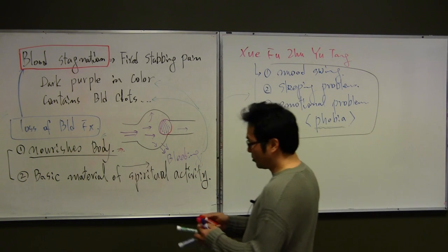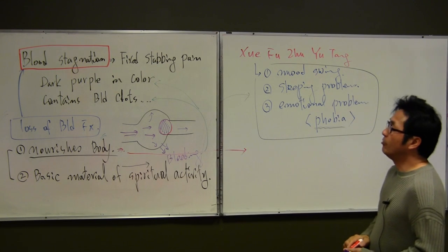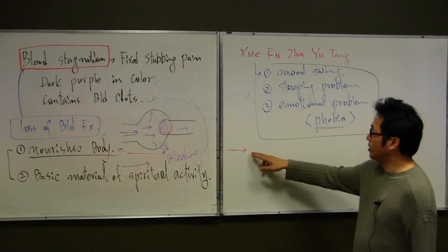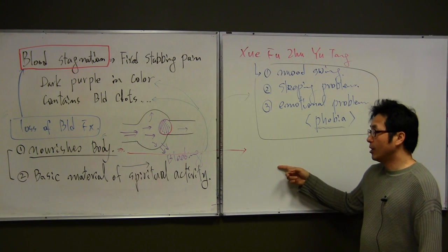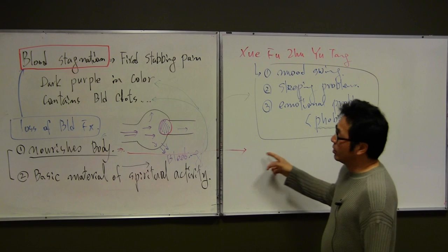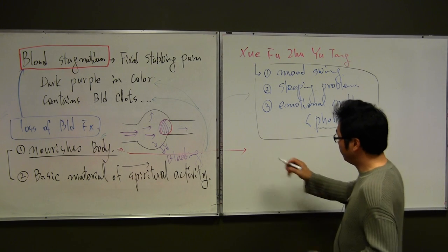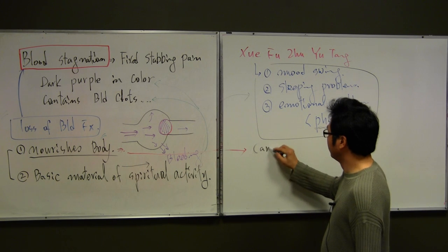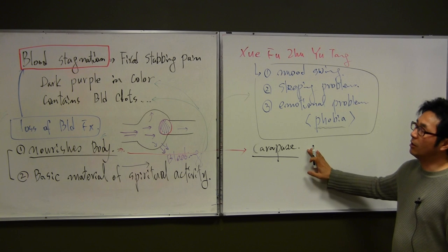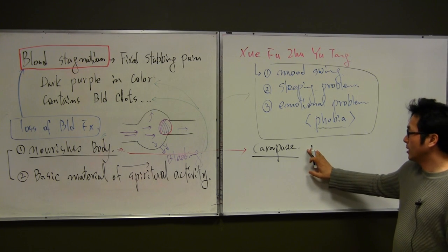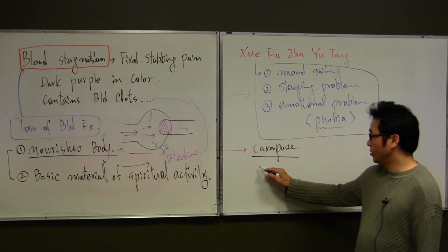This one of sign which is Xuefu Zhuyu Tang condition which is good explanation of spiritual problem. And also another one with nourishment of the body, the nourishing function. Who has a blood stasis long-term, they have dry skin or scaly skin can be seen and also associated area, the skin will be getting thicker with calluses, with thick and scaly skin can be seen with blood stasis type.